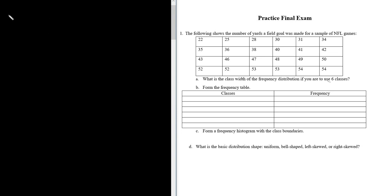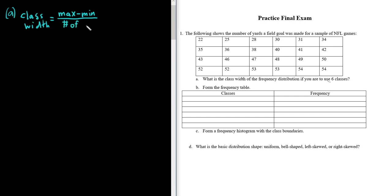For part A, I'll do it up here. The formula for the class width is: class width equals the max — the biggest number — minus the min — the smallest number — divided by the number of classes. The data is in order, so the maximum is 54 and we divide by the number of classes, which is six.